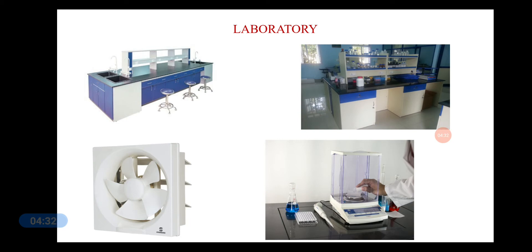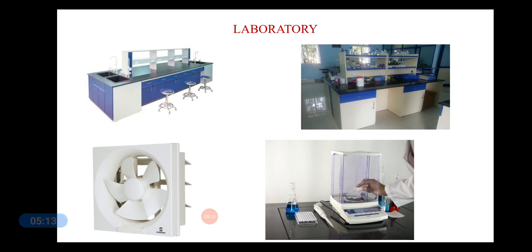Now the reagent shelf is where you will find the different types of chemicals. Within the laboratory, either a number of windows must be present or there are exhaust fans. These exhaust fans help in taking out the air from the laboratory, since different types of gases can be produced during experiments. To remove all these gases, exhaust fans are necessary.